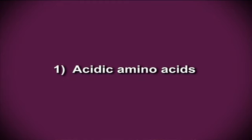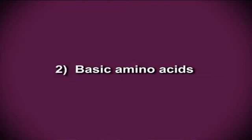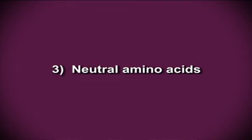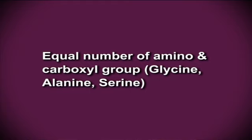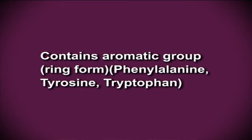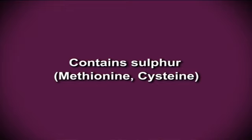Amino acids can also be classified based on their R group or side group. First, acidic amino acids contain more carboxylic groups than amino groups — examples are aspartic acid and glutamic acid. Second, basic amino acids contain more amino groups than carboxylic groups — examples are lysine, glutamine and histidine. Third, neutral amino acids have equal numbers of amino and carboxylic groups — examples are glycine, alanine and serine. Fourth, aromatic amino acids contain an aromatic ring — examples are phenylalanine, tyrosine and tryptophan. Fifth, sulfur-containing amino acids contain sulfur — examples are methionine and cysteine.